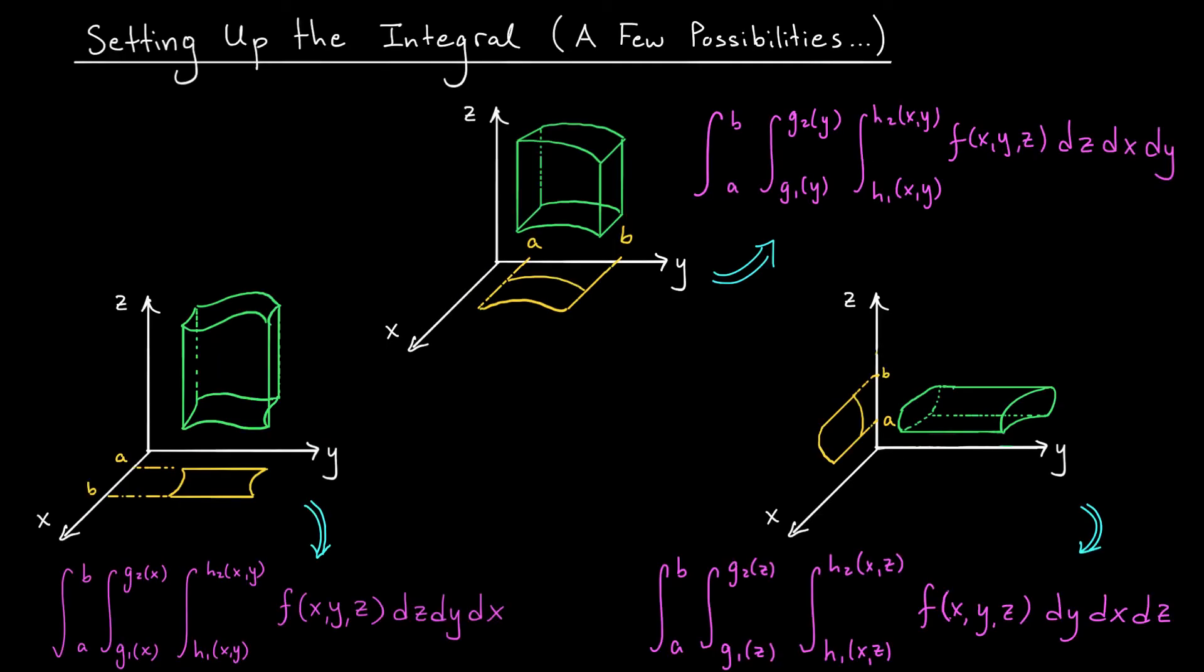Think back to how you set up double integrals over non-rectangular domains. You probably started by sketching the domain of integration, and then deciding if it was type 1 or type 2. If it was type 1, that meant that x was between two constant values, and y was between two functions. You integrated y first, and then x. If it was type 2, the reverse was true. Y was between two constants, and x was between two functions. So you integrated x first.